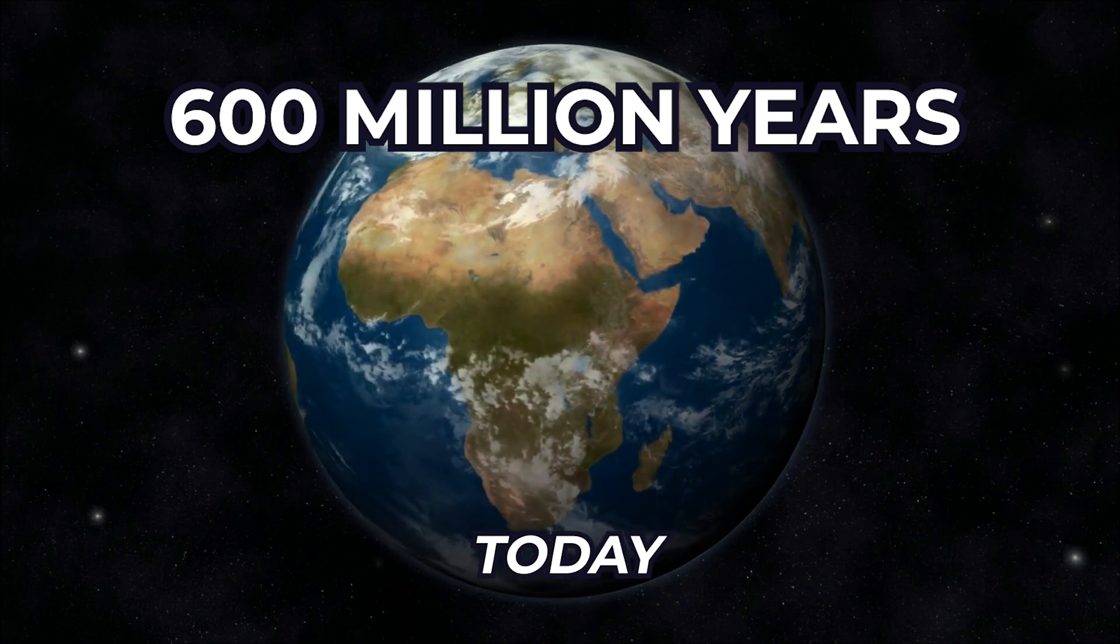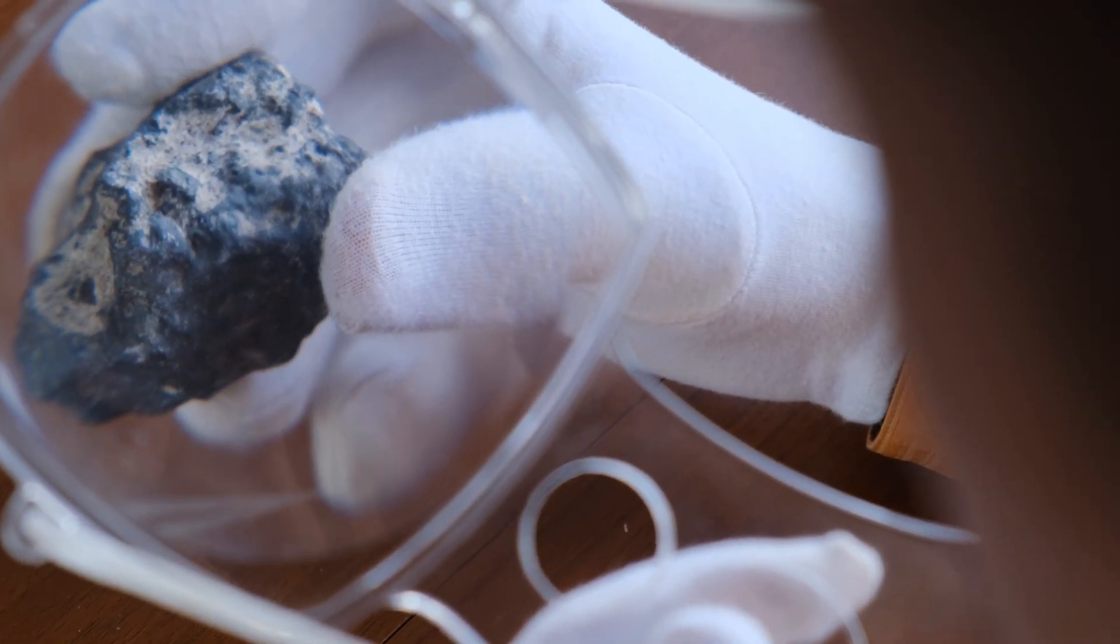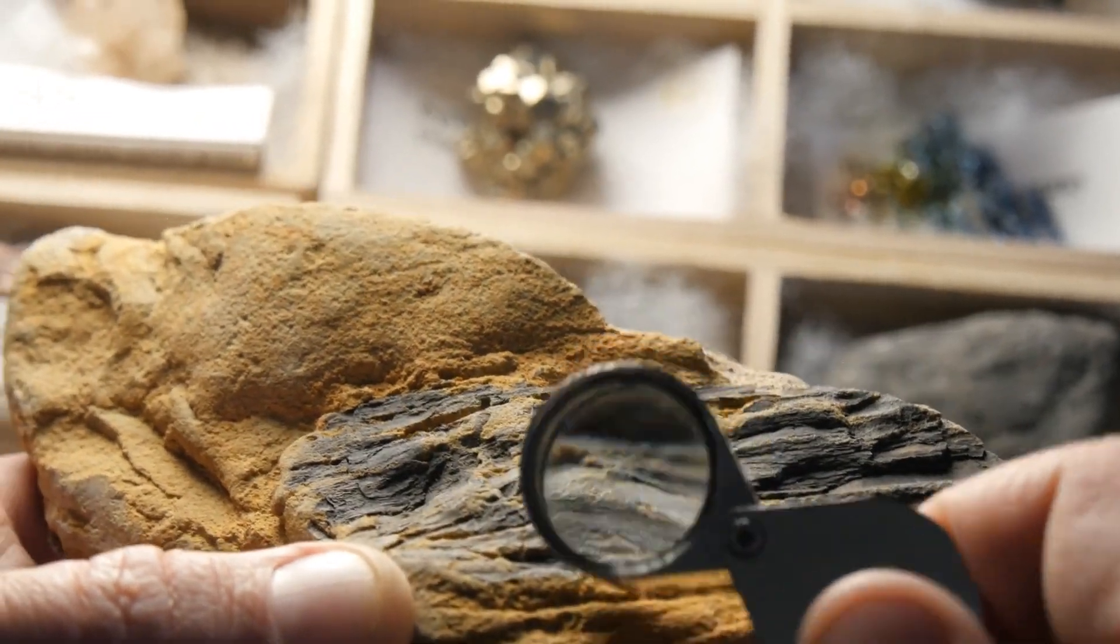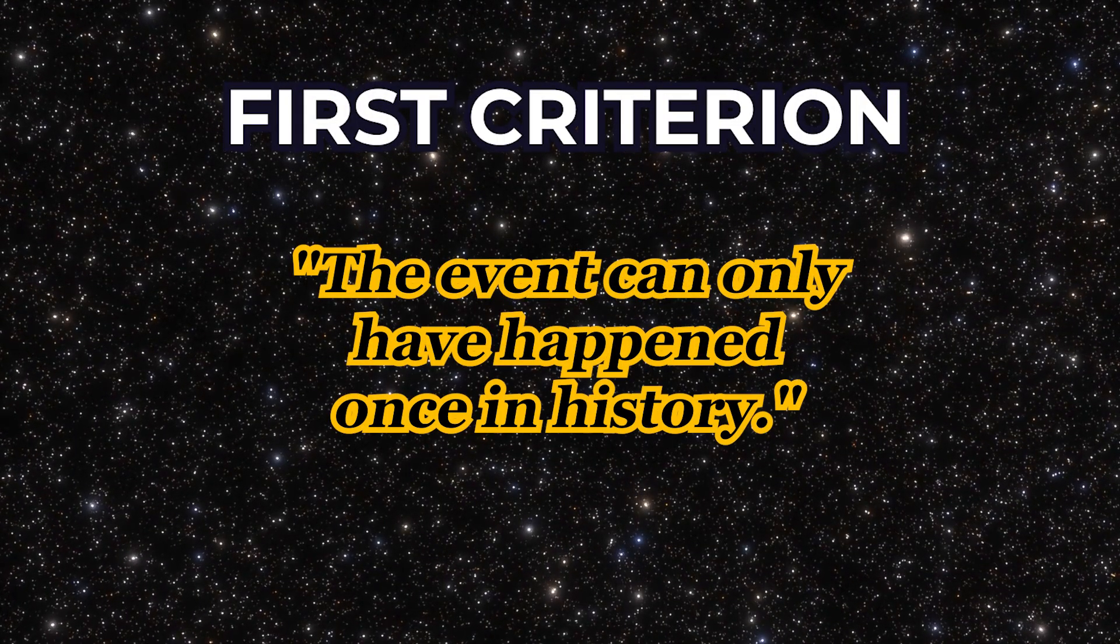But it was indeed only 600 million years after that when life actually emerged on our planet. I must make a side note. This time estimate only goes as far as our fossil records and geological markers. Life may have taken less time to emerge, but this is the furthest back in time we can go. Knowing this, what can we say about the emergence of life? First, let's look at the first criterion. The event can only have happened once in history.